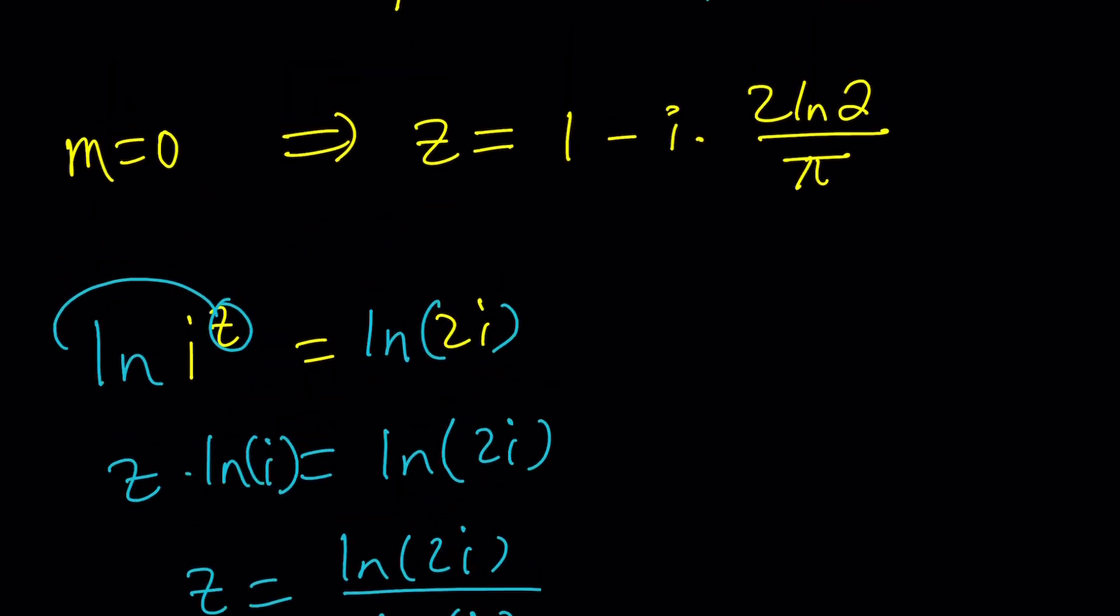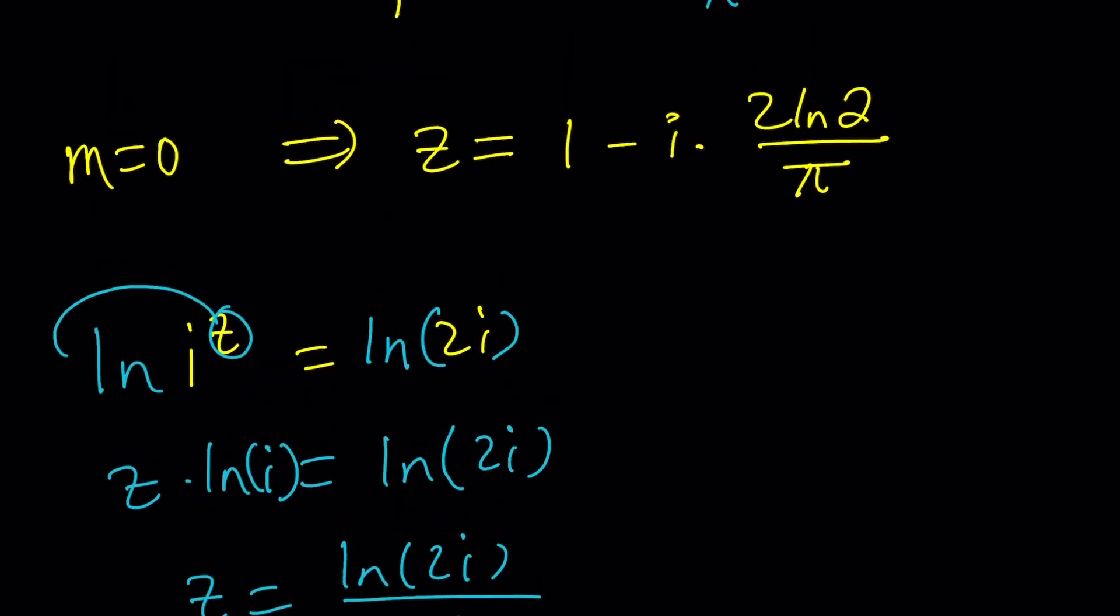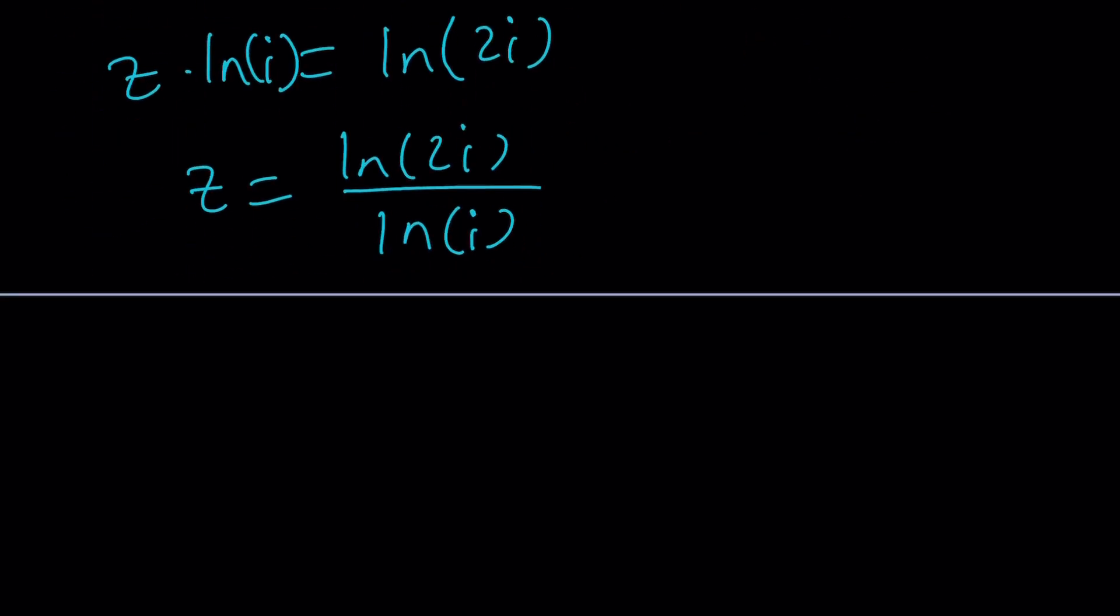So this looks like a simpler solution, but how do you reconcile these two solutions, right? Are they the same? Are they identical or are they totally different? Or is this wrong, right? Let's go ahead and find out. And then we're going to look at Wolfram Alpha.